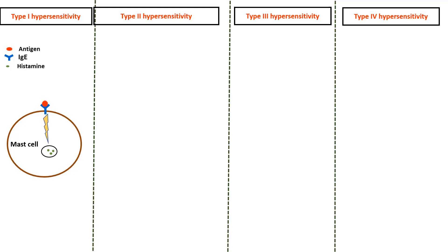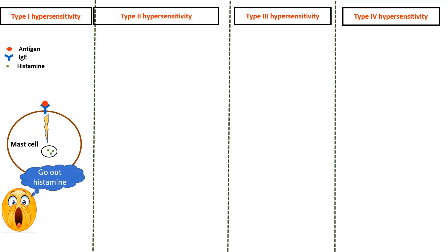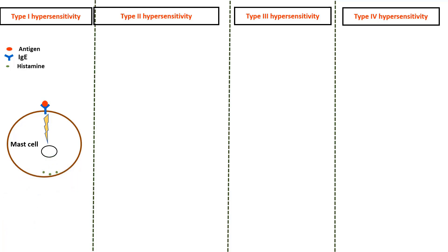This antigen-antibody binding induces a cascade of intracellular reactions resulting in the release of large amounts of histamine from the storage vesicles. The released histamine induces various degrees of allergic reactions.